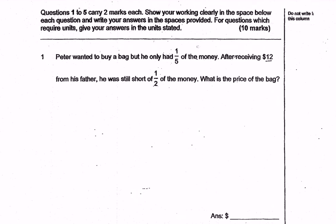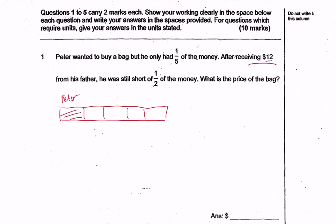So here we have the cost of a bag, and right now Peter only has one-fifth of it. Peter says that after receiving $12 from his father, he's still short of half of the money.